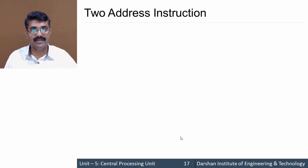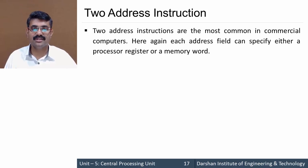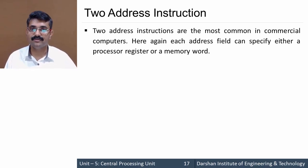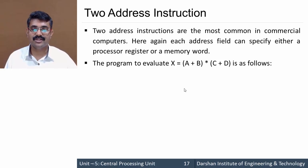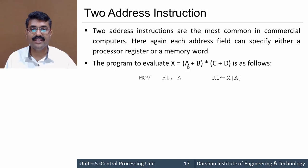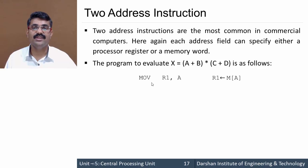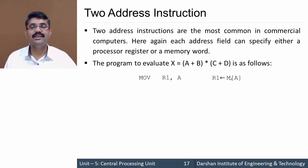Now let's see two address instruction. Two address instruction contains two operands and is mostly used in commercial computers. The two operands specified can be a processor register or a memory word. To evaluate the same expression, since we don't have a third address, we first fetch a from memory into a register R1 using a MOV instruction: MOV R1, a — which transfers the content of memory at address a into register R1.